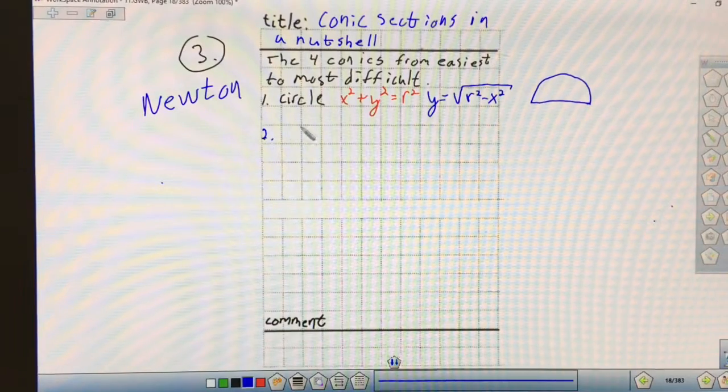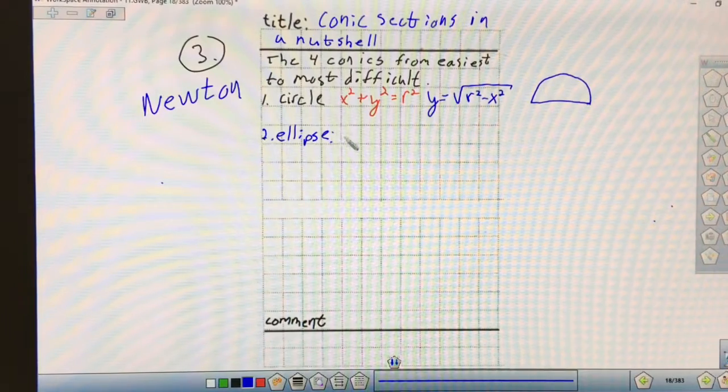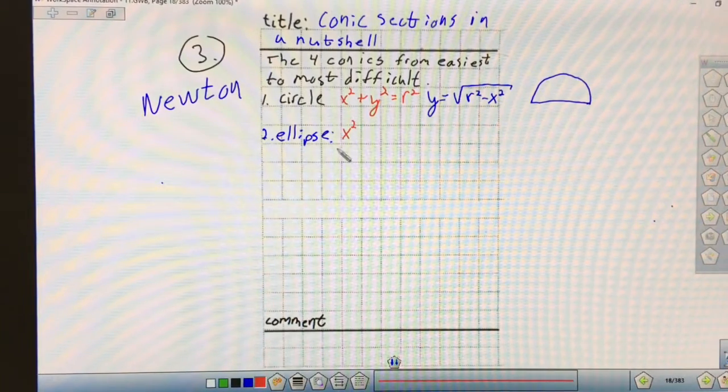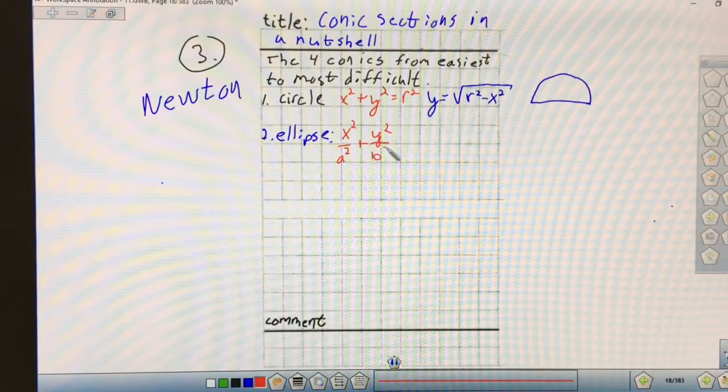The second conic function would be the ellipse. That would be the second easiest, in my opinion. That's going to be X squared over A squared plus Y squared over B squared equals one.